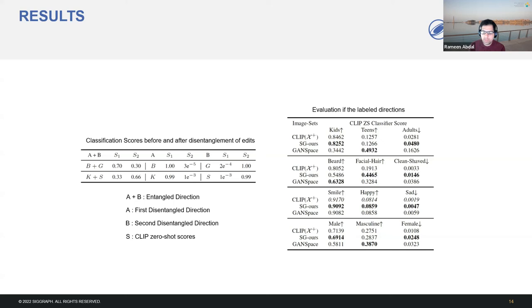Now we show some quantitative results on faces. First, in order to determine if the output directions from the refining step lead to disentangled direction, we show in the first table the CLIP zero-shot classification scores for the beard plus glass and kids plus smile before and after the disentangling step. The results show that the directions are in fact disentangled from the original entangled vector. Here A plus B represents entangled direction, A is the first disentangled direction, B is the second disentangled direction, and S represents the CLIP zero-shot scores. Notice the scores before and after the disentanglement step. For example, Beard's score changed from 0.7 to 1.